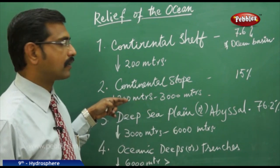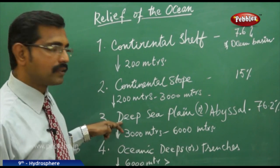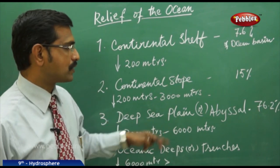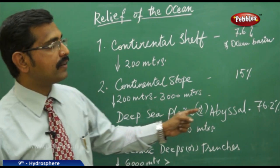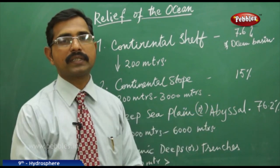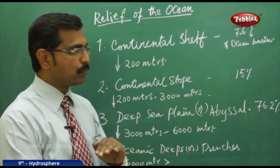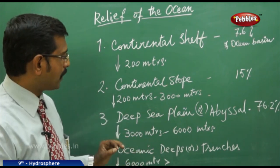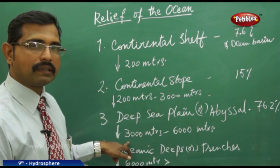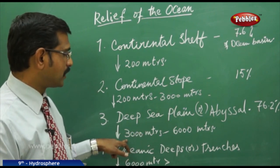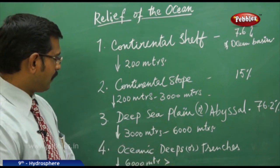The third part is the deep sea plains, also called the abyssal plains, forming 76.2% of the ocean basin. These are the world's flattest and smoothest surfaces, found at depths from 3000 meters to 6000 meters.